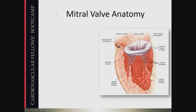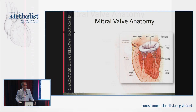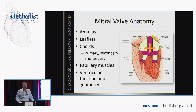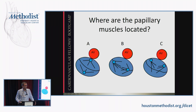The mitral valve anatomy involves the whole subvalvular apparatus — all these things must be in the right geometry for the valve to work. The name 'mitral' comes from the Bishop's mitre. Unlike the aortic valve where it's just leaflets, there's a lot below the mitral valve that really matters. Now, here's an anatomy question: this is the surgeon's view looking down on the mitral valve, with the aortic valve, posterior leaflet, and anterior leaflet labeled.